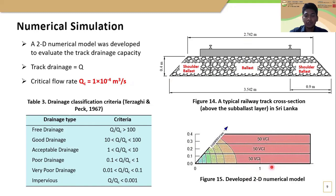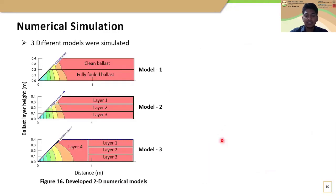An impervious boundary was used at the bottom and a free-drainage boundary was used at the top of the shoulder ballast. In this study, three different models were simulated. In model 1, the ballast layer was divided into two horizontal layers: the top layer was filled with clean ballast and the bottom layer was filled with fully fouled ballast, representing the undercutting operation in a railway track. In model 2, the ballast layer was divided into three equal horizontal layers and different VCI values were considered in each layer to obtain the track drainage capacity. In model 3, the shoulder ballast was considered separately and the ballast layer was divided into three equal horizontal layers, with different VCI values considered in each portion to obtain the track drainage capacity.